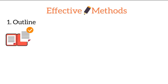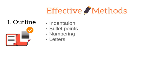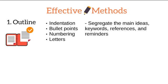Now I want to talk about some effective methods that you can apply right now and immediately. Number one is to outline by adding indentations, bullet points, numbering, and letters. The reason why these things can be effective is it segregates the main ideas, keywords, references, and reminders. This is a lot easier when you have an electronic device, a mobile phone or laptop. Because you're easily indenting things, and when you go back and review your notes, you're actually scanning the document, and then the indentation, the bullet points, the bold letters, the numbering and so forth actually helps stand out.